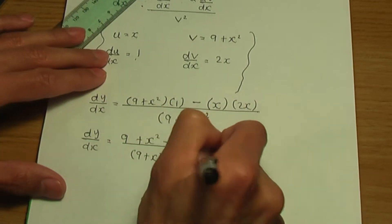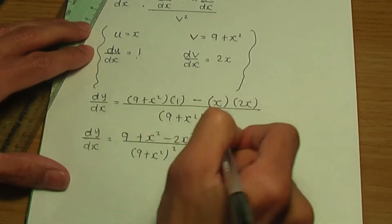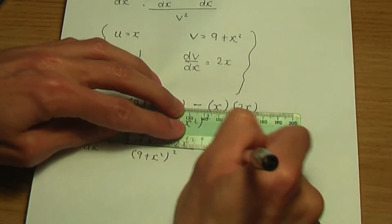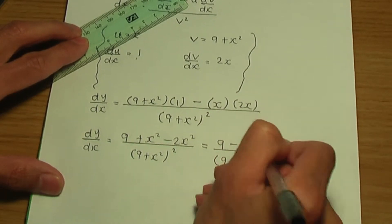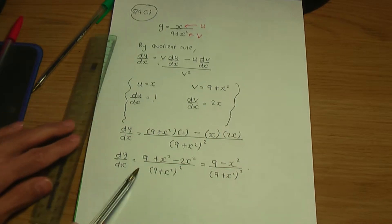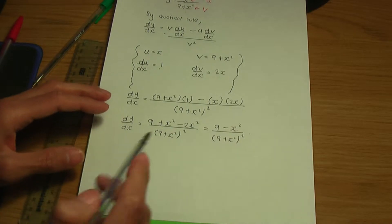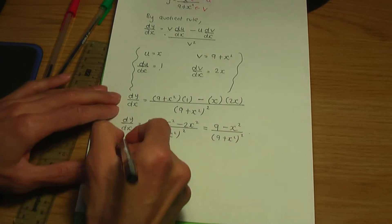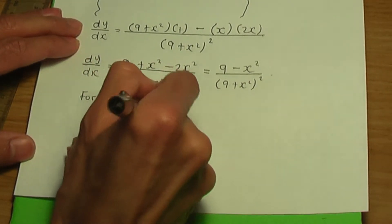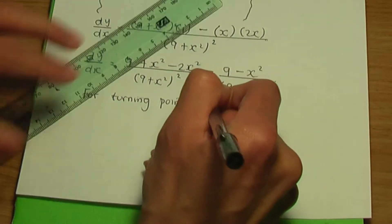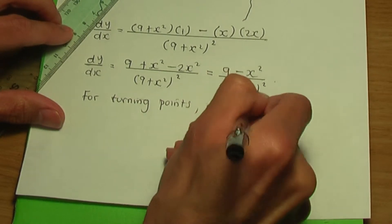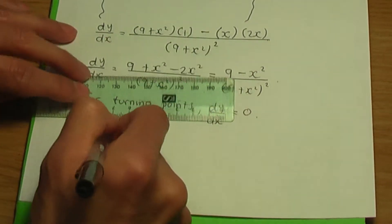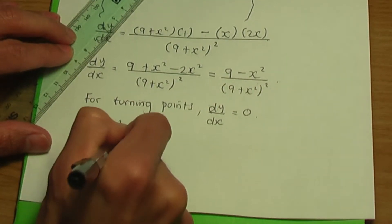Let's simplify the numerator further. Combining like terms: x squared minus 2x squared gives minus x squared, so dy over dx equals 9 minus x squared all over (9 plus x squared) squared. Now remember the condition: for any turning point, the gradient of the tangent dy over dx equals 0.